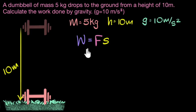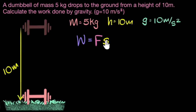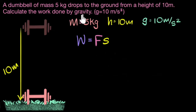Great idea to pause the video and try to get the answer yourself first. Notice we already know the displacement of the dumbbell — it gets displaced by 10 meters, which is just the height through which it fell down. So all we need to do now is calculate the force of gravity.